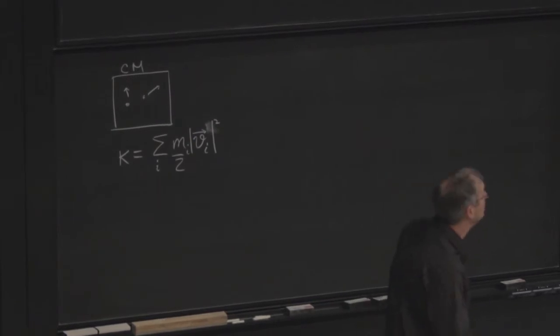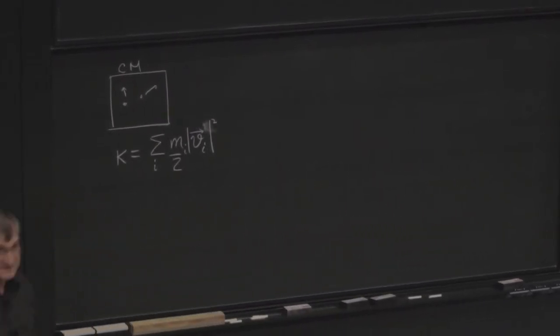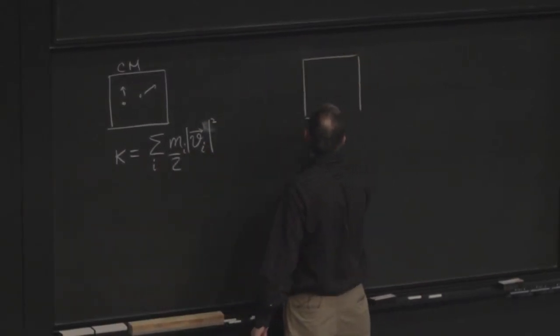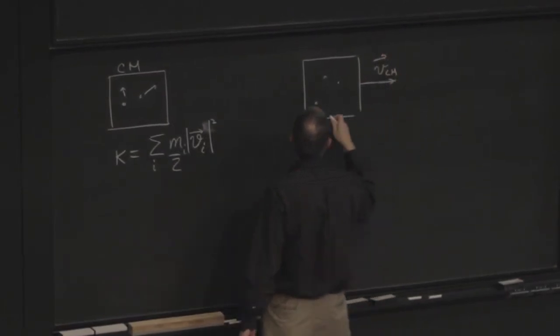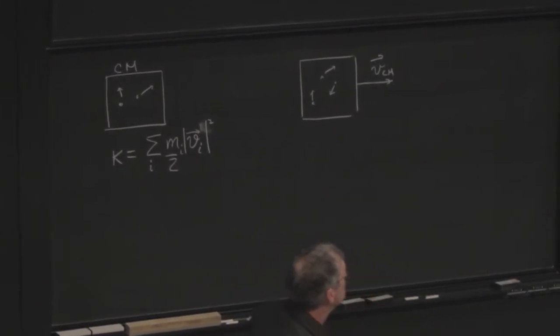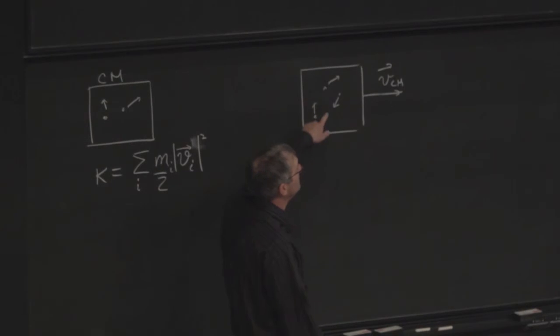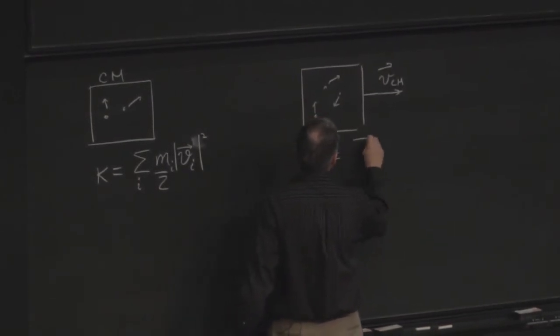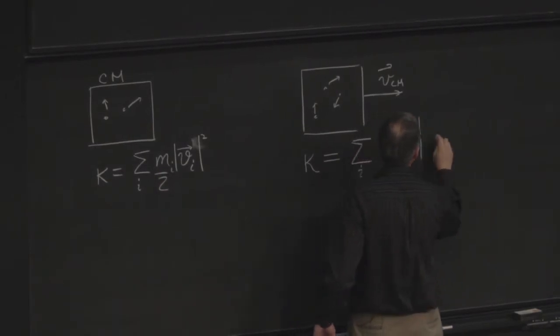And we want to relate that. Suppose that that center of mass frame is actually moving to the right compared to the lab, and it's moving to the right at speed v center of mass. So now what is the velocity of every particle? Well, in this frame, I have to sum 1 half m sub i, but the velocity of every particle...